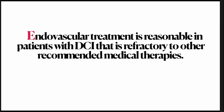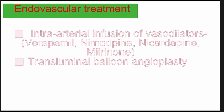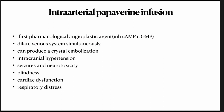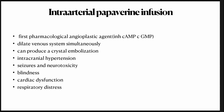Endovascular treatment is reasonable in patients with delayed cerebral ischemia refractory to other recommended medical therapies. It includes intra-arterial infusion of vasodilators and transluminal balloon angioplasty. The first pharmacological agent used was papaverine, which inhibits cyclic GMP and cyclic AMP, but it also dilates the venous system, produces raised ICP and crystalline dissociation, and is therefore no longer used.